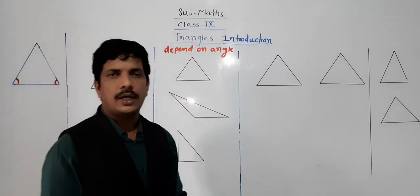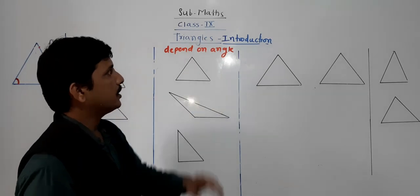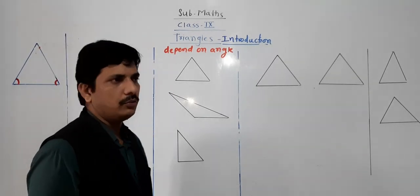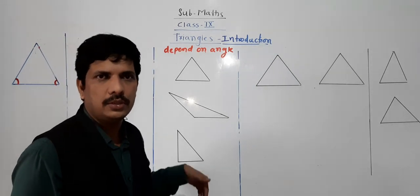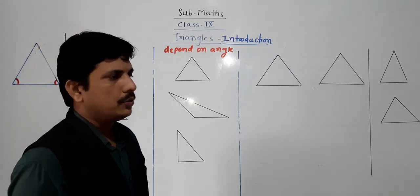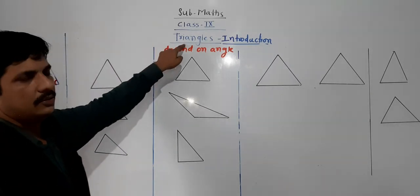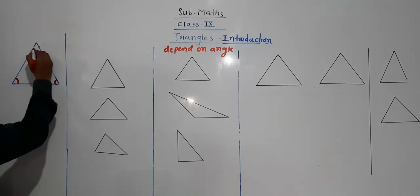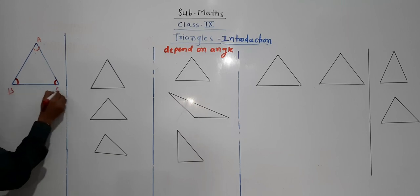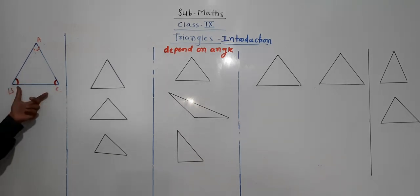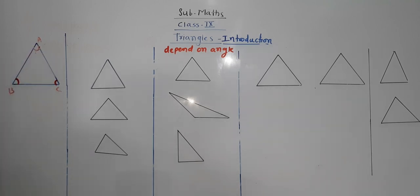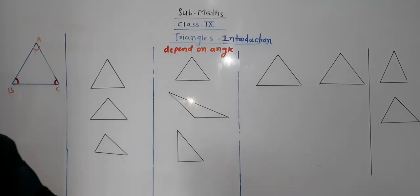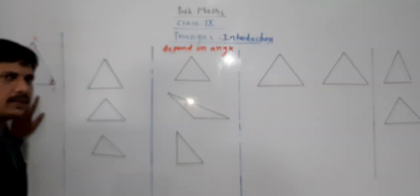Hello everybody. Today we are going to start our next session on Triangles. We are going to revise some basic things. Triangle is a closed figure which is made up of 3 line segments. We name it Triangle ABC, with sides AB, BC, and AC. Due to these 3 sides the figure is closed. A triangle has 3 sides and 3 angles, giving 6 elements in total.